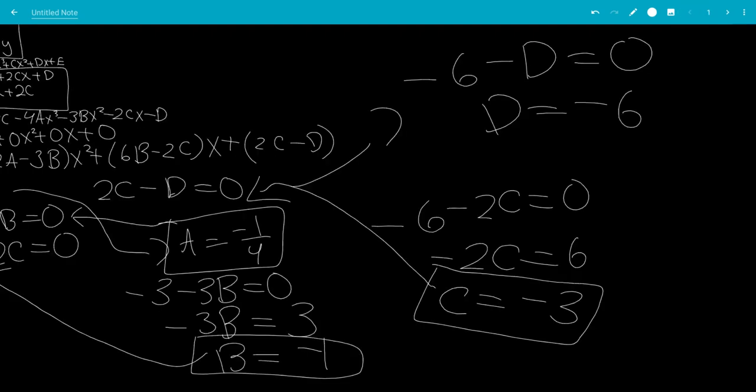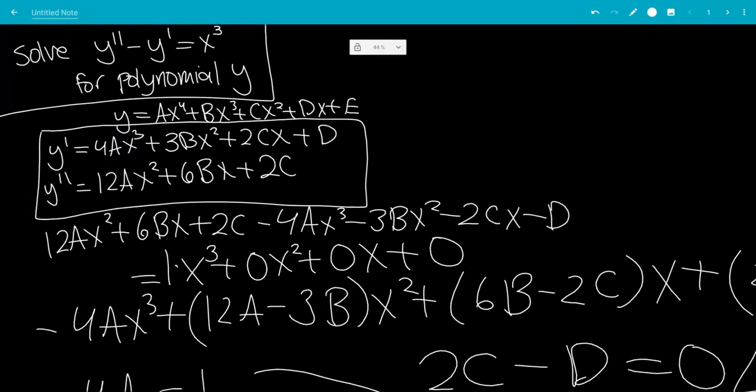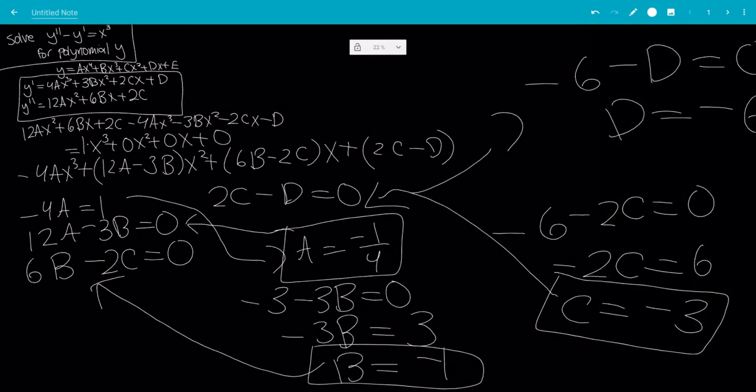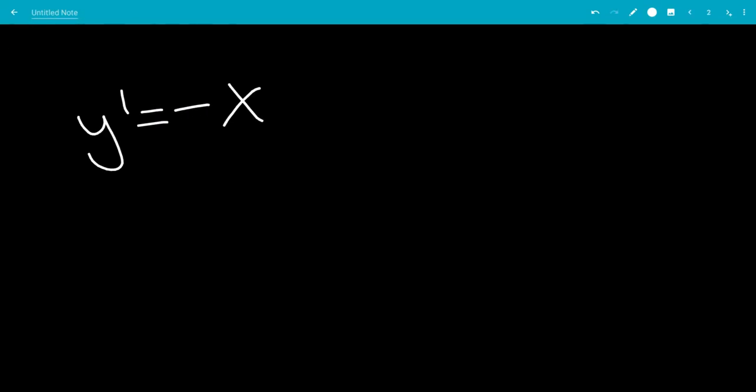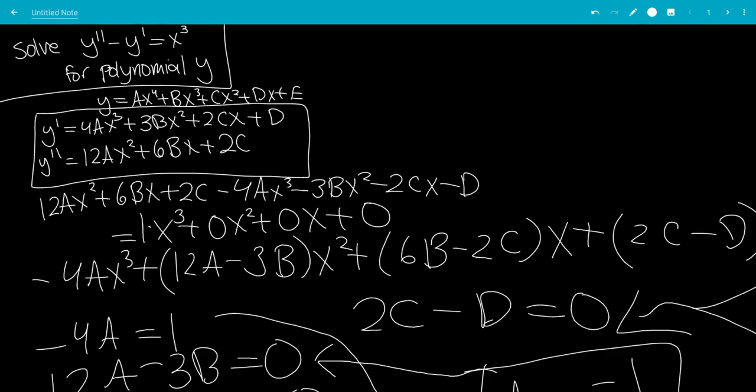So now that we have that, y prime. So originally we have y prime equals 4ax cubed. So that would be just x cubed. So a is minus 1 fourth. So that would just be minus x cubed. Now b is negative 1. So this would just be minus 3x squared.